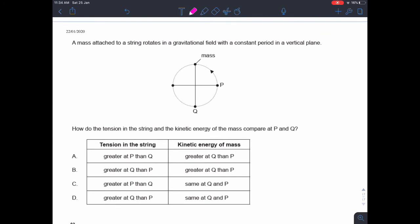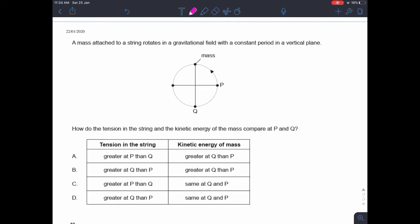Question 39. A mass attached to a string rotates in a gravitational field with constant period in a vertical plane. How do the tension in the string and the kinetic energy of the mass compare at P and Q. So the tension in the string, the tension in the string at Q has to balance the weight of the force and it has to provide the centripetal force.